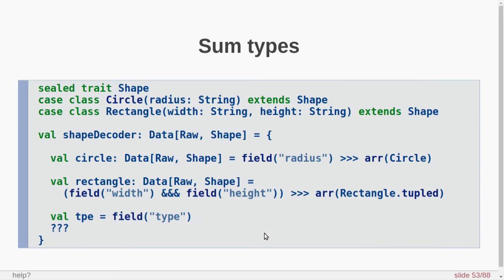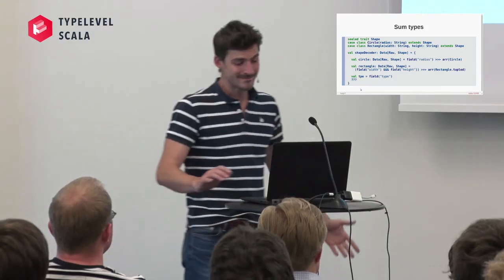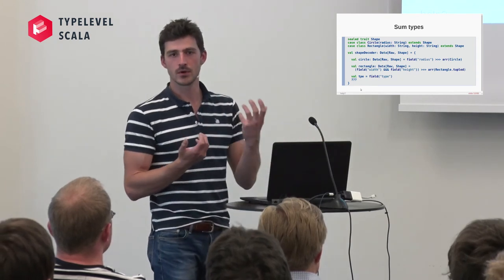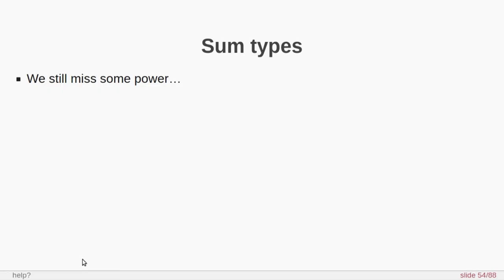It's also possible to represent this computation as a nice diagram. The `&&&` operator combines two arrows in parallel, and the `>>>` operator combines two arrows sequentially. So with an arrow, we can define processing pipelines and combine them sequentially or in parallel. But what about sum types? Back to the shape data type: we can describe the circle, rectangle, and a field with type. But we want to say: according to the actual value of the type, describe either a circle or rectangle. Unfortunately, plain arrows don't have this operation, so we need a new abstraction named Choice.